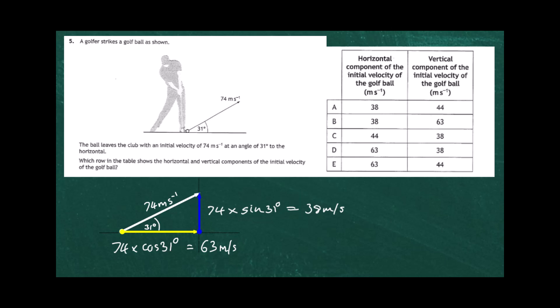Looking at the table, the horizontal velocity is 63 meters per second and the vertical velocity is 38 meters per second. Matching these up with the given options, the answer is T.